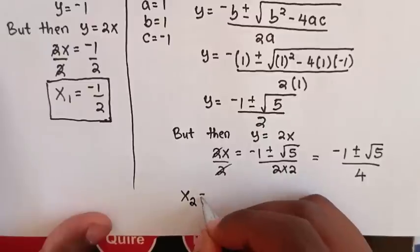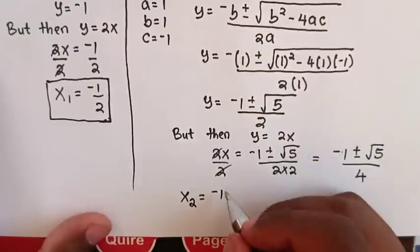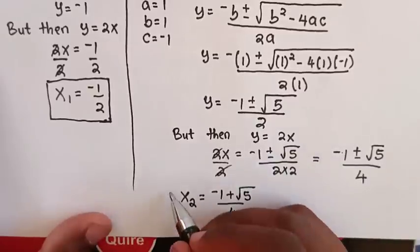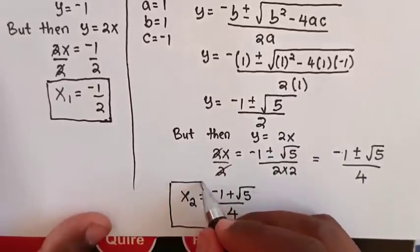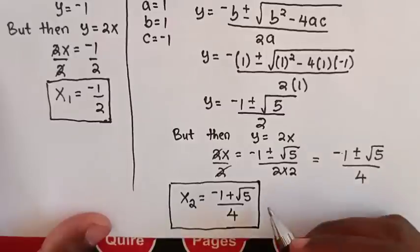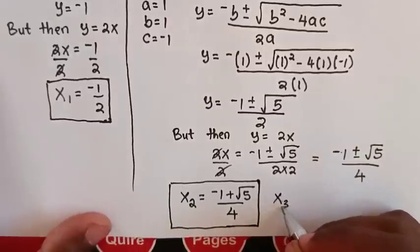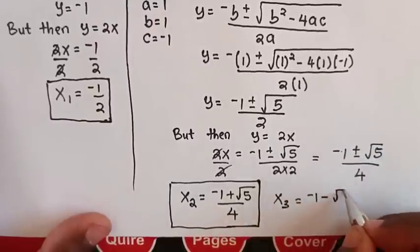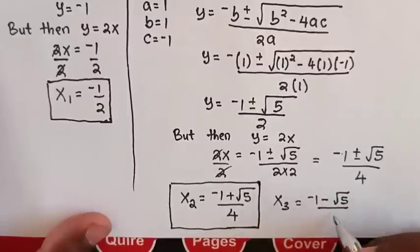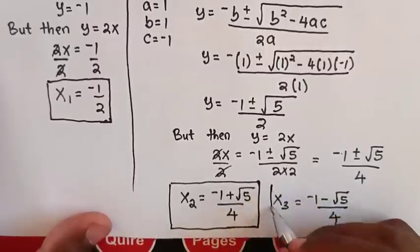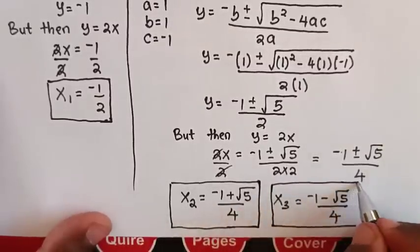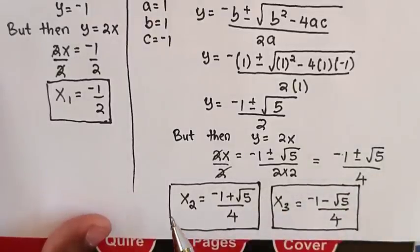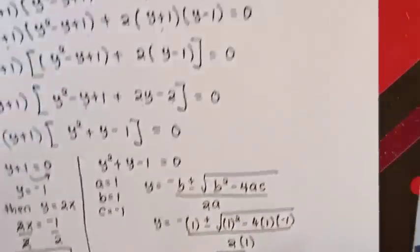So x₂ equals negative 1 plus square root of 5, all over 4, and x₃ equals negative 1 minus square root of 5, all over 4. Therefore we have 3 values of x.